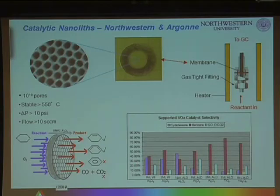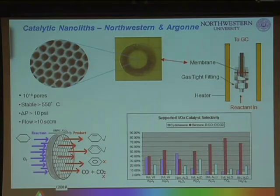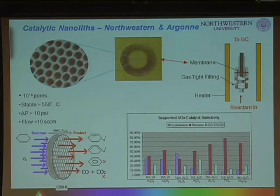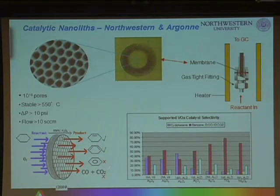We've also been able to make interesting materials through collaborations — for example, what we call a catalytic nanolith: a little honeycomb structure with tiny pores that we coat with a catalytic material and run a reaction through. Here's one of these selective oxidation reactions: we take cyclohexane, react it with oxygen, and the desirable product is the olefin, while undesirable products are benzene and carbon oxides. The vanadium I was showing you earlier is the catalyst for this reaction.